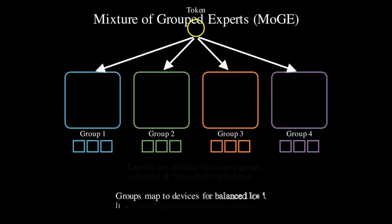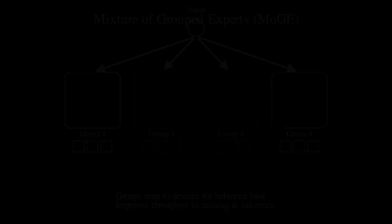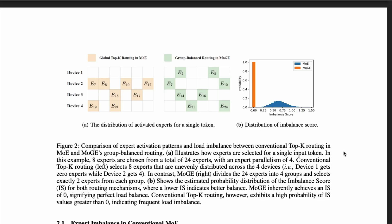In a typical distributed deployment setup, experts are assigned to devices according to their group ID. MoGE — Mixture of Grouped Experts — effectively balances the computational load across all participating devices. This design offers a substantial improvement in throughput in both training and inferencing scenarios.